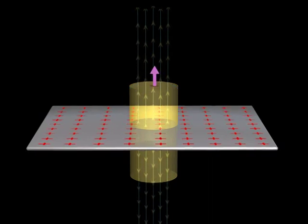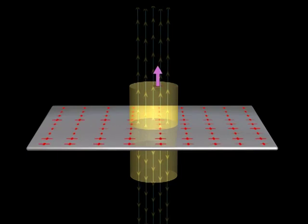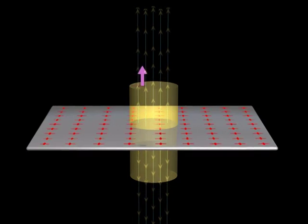Here, electric lines of force are passing parallel to the curved surface of the cylinder. Hence, the electric flux due to electric field of the plane sheet of charge passes only through the two circular caps of the cylinder.